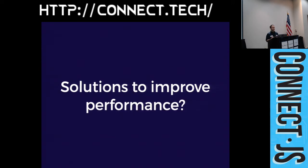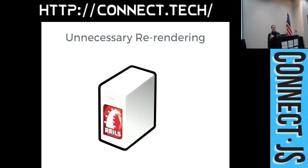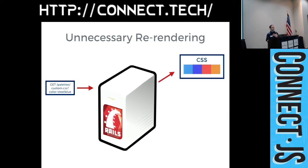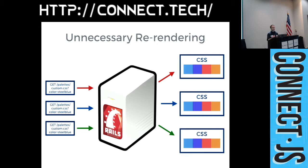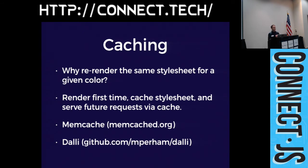We need to find ways to improve performance. First, we're unnecessarily re-rendering stylesheets — if a request comes in for steel blue, we render it; another request comes in, we render it again; a third request, we render again. Our stylesheets don't change frequently enough to justify this. This is a good candidate for caching. The first time a user requests a color they're unlucky and have to wait, but once rendered we cache it — future requests get served from cache. This is perfect for popular colors like red or blue.